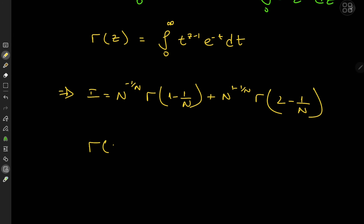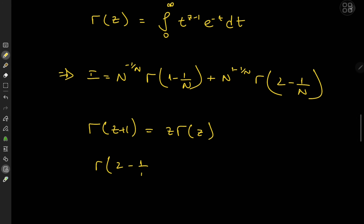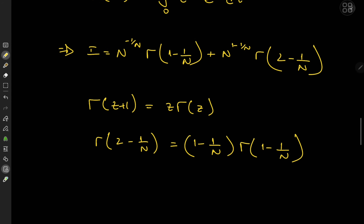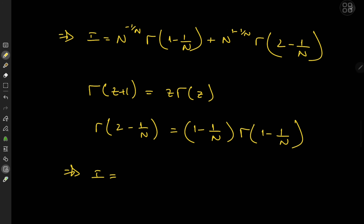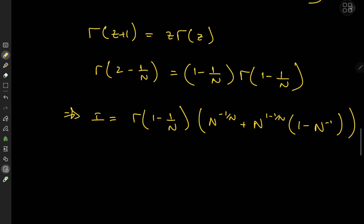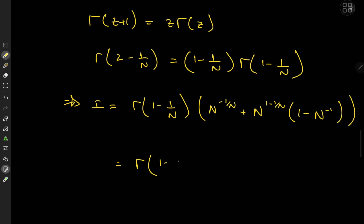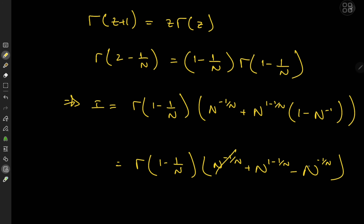Now we apply the recursion formula for the gamma function: gamma(z + 1) equals z times gamma(z). We have gamma(2 minus 1 over n), which expands as (1 minus 1 over n) times gamma(1 minus 1 over n). So we can factor that out, giving I equals gamma(1 minus 1 over n) times [n to the negative 1 over n plus n to the 1 minus 1 over n times (1 minus 1 over n)], which simplifies to n to the negative 1 over n. There's some lovely cancellation — n to the 1 minus 1 over n minus n to the 1 minus 1 equals 0 — leaving just n to the negative 1 over n.